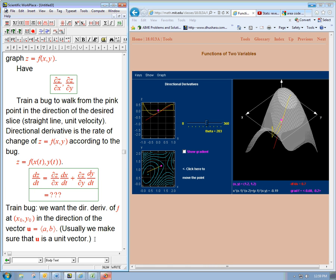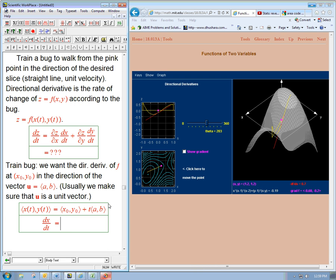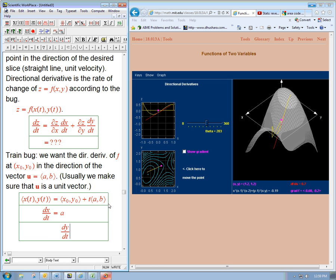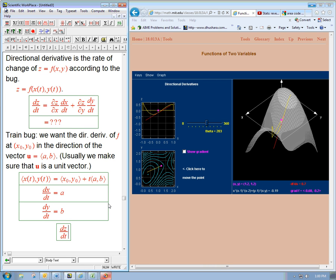So what's a function that would do that? We want x of t, y of t, the bug's position. Well, we just start at x naught, y naught, plus t times a, b. And so what's dx/dt? It's nothing but a, and dy/dt is nothing but b.